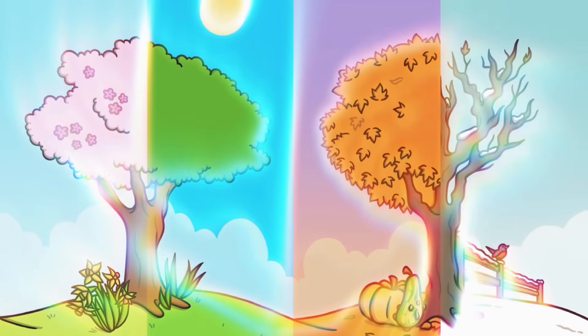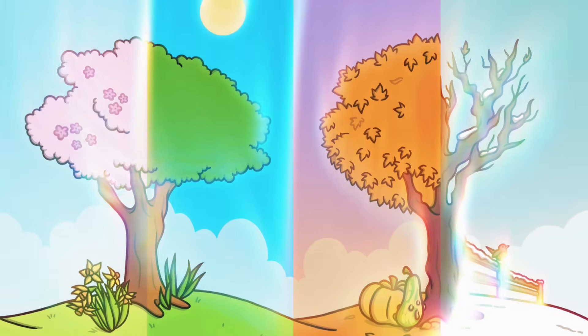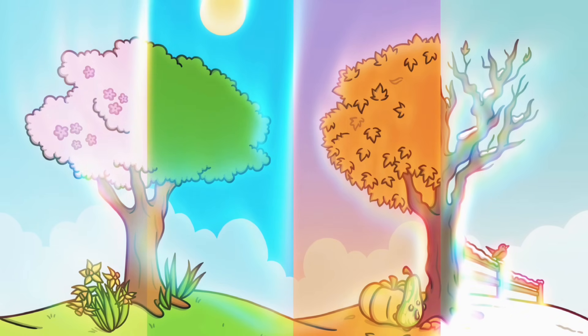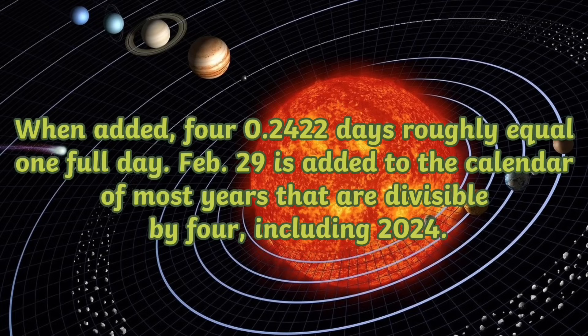That would affect things such as agriculture. This is why leap years exist. When added together, four times 0.2422 days roughly equals one full day. February 29th is added to the calendar of most years that are divisible by four, including 2024.